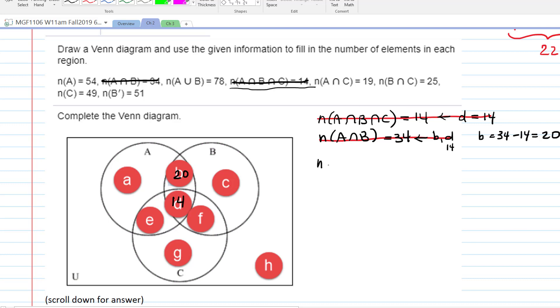How about the number in A intersect C being 19? How does that help? We enter A intersect C is E and D, and we already know D is 14. So that must mean that the number in E is 19 minus 14. Did you get 5 for that? Yes. Awesome.